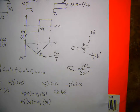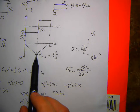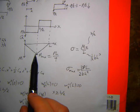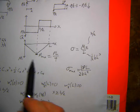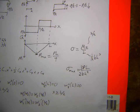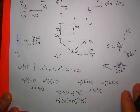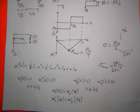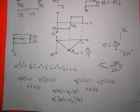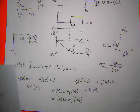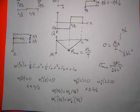Doesn't it sum contributions from both sides? It should be like the moment on one side and on the other side. It's just one moment in the middle that's acting — P/2 times L/2. I want to say no, but now I'm not entirely sure. I need to go through this again in a bit more detail.